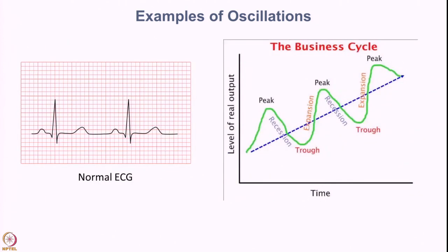On the left side you can see an image of a normal ECG — nothing but your heartbeat measured using an electrocardiogram. It is nothing but oscillations that you can observe with a repetitive pattern along the time axis.